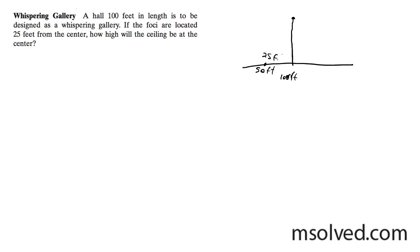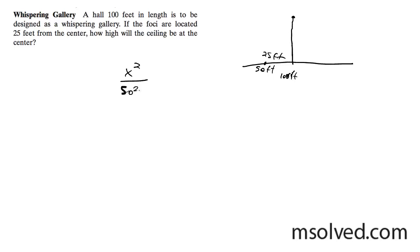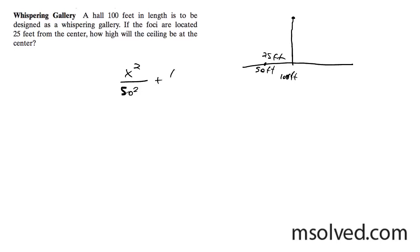and the foci are located at 25 feet. So in this case, we have x squared over a squared, which in this case is 50 squared, plus y squared over b squared is equal to 1.